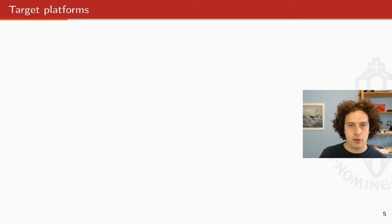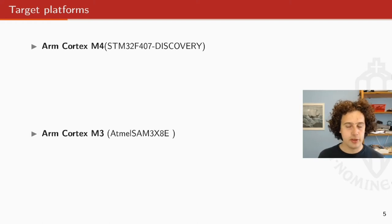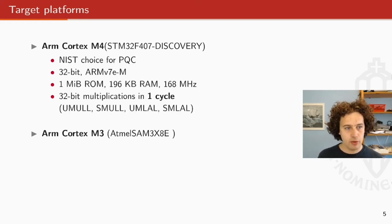So then the target platforms, we chose two different target platforms. First, there's the ARM Cortex M4. We use the STM32F407 discovery board. This board is, I think, the main target for all the NIST workshop schemes. I think NIST at some point said that in some presentation. It's a 32-bit platform. It has the ARMv7 instruction set. It has a lot of ROM for microcontrollers and also a lot of RAM. And it actually is like 168 megahertz. Because it's an M4, it has a couple of really nice instructions where you can do 32-bit multiplications in a single cycle.